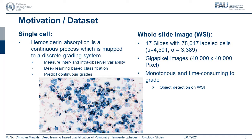Let me continue by talking about the motivation of the dataset. We divide our tasks into two groups. First, single-cell analysis. The hemosiderin observation is a continuous process which is mapped to a discrete grading system — cells don't jump from grade 0 to grade 1, they have a continuous process by absorption of hemosiderin. So the idea is to develop a deep learning-based model which can not only classify the cells but also predict a continuous grade, saying, for example, this is a grade 1.5 cell.